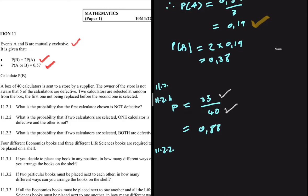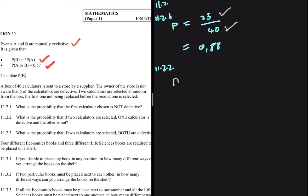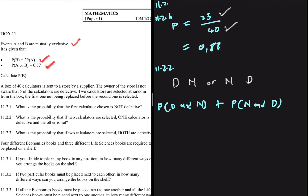For 11.2.2: what is the probability that if two calculators are selected, one is defective and the other is not? This can happen in two ways: either the first calculator is defective and the second is not defective, or the first calculator is not defective and the second is defective. So we need the probability of the first being defective and the second not, plus the probability of the first not being defective and the second being defective.